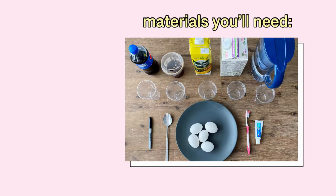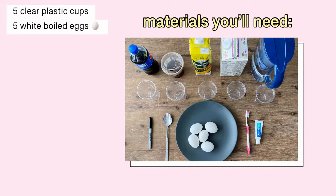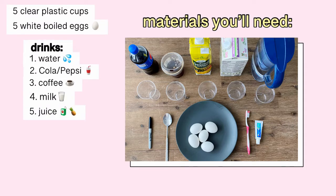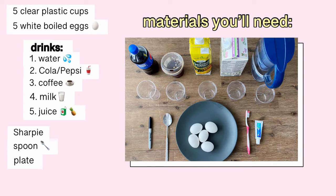For this experiment you'll need the following items: five clear plastic cups, five white boiled eggs, and the following drinks — water, cola or Pepsi, coffee, milk, and juice. I'm going to be using pineapple juice here; you can use any types of drinks you have handy. Also a Sharpie for labeling, a spoon to scoop out the eggs from the cup, a plate, and finally a toothbrush and toothpaste, as we're going to see how brushing our teeth can prevent tooth decay.